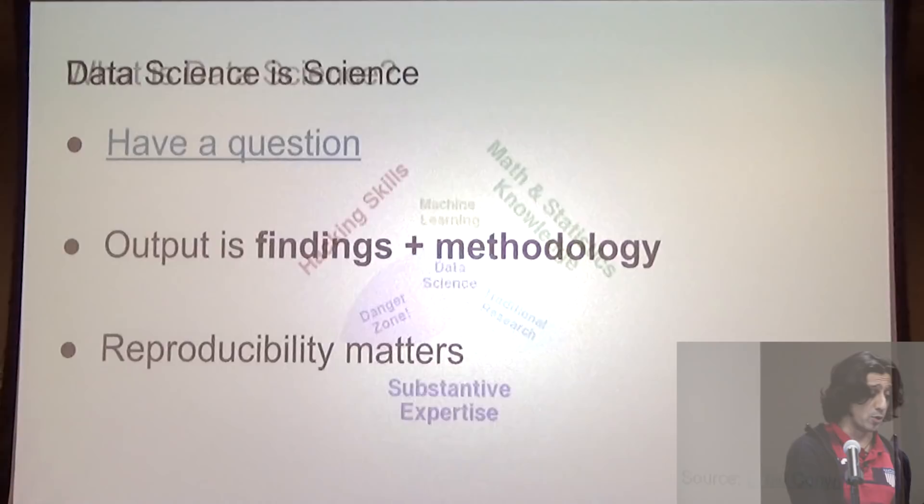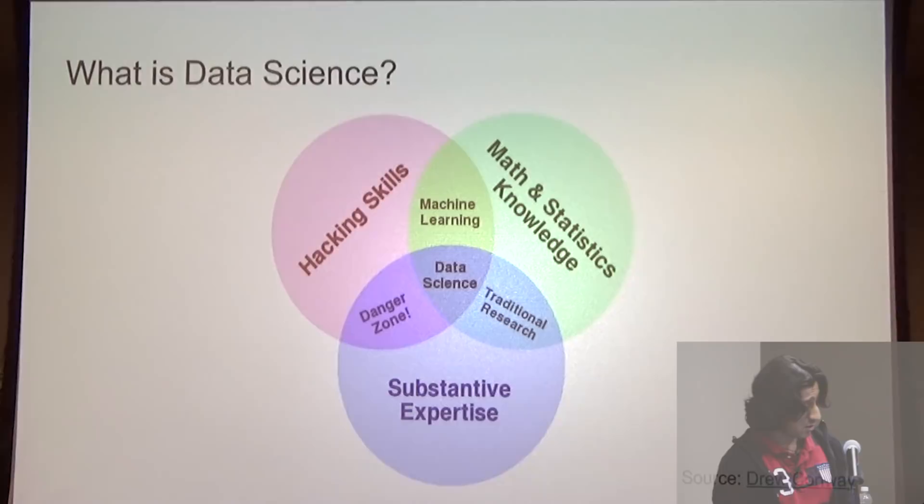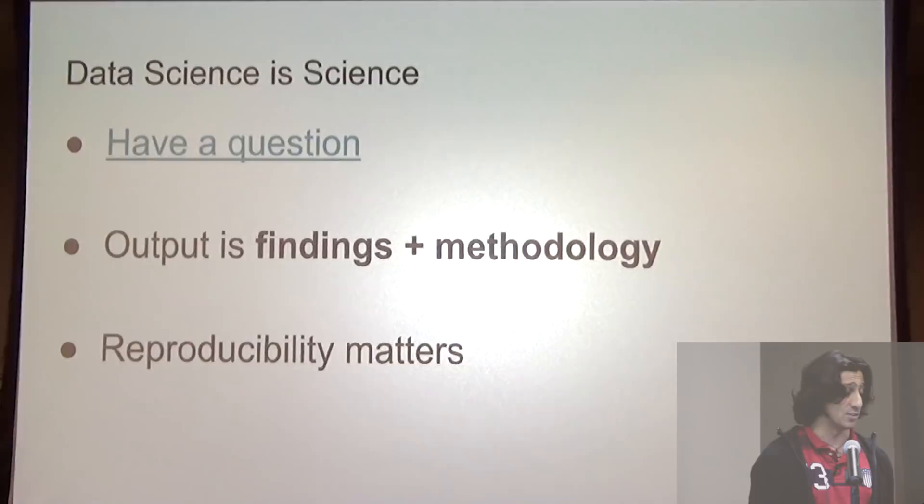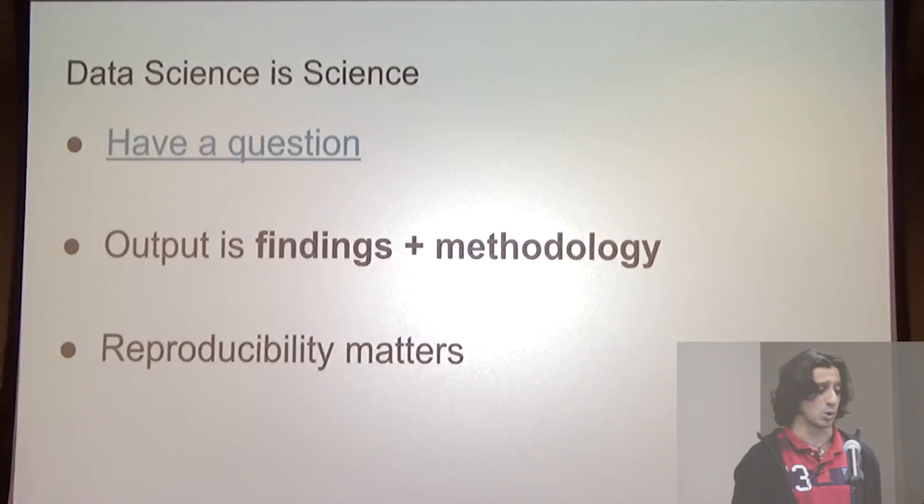First and foremost, we have to remember that data science is a science. We have a question we want to answer, a hypothesis of why something is happening. Our output is not just our findings — it's also the steps we took to get to our results. So what this really means is that reproducibility is really important, and our analysis needs to be repeatable.